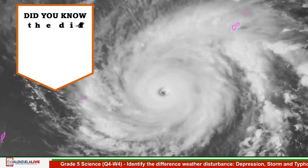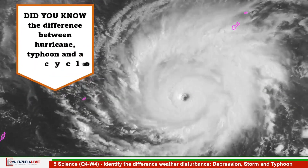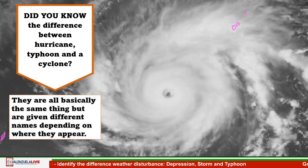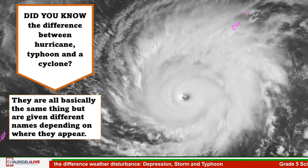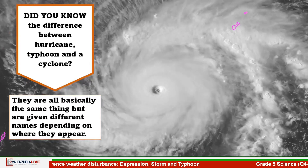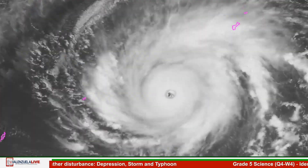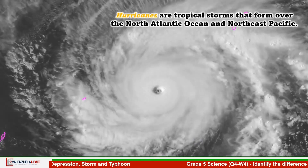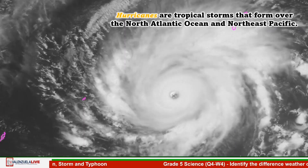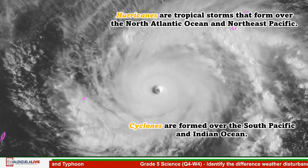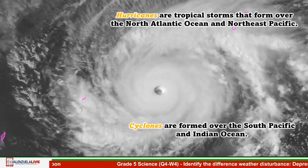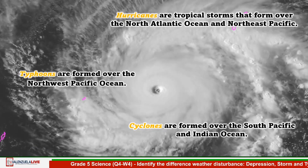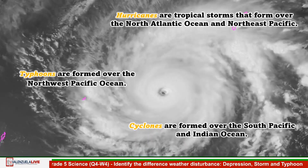Do you know the difference between hurricane, typhoon, and a cyclone? Well, they are all basically the same thing but are given different names depending on where they appear. Hurricanes are tropical storms that form over the North Atlantic Ocean and Northeast Pacific. Cyclones are formed over the South Pacific and Indian Ocean. Typhoons are formed over the Northwest Pacific Ocean.